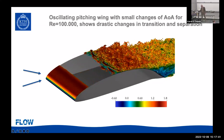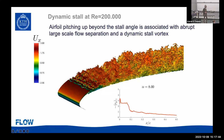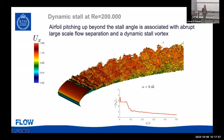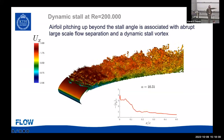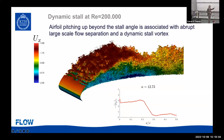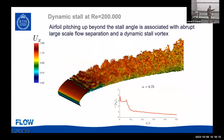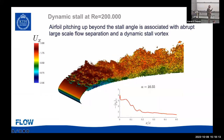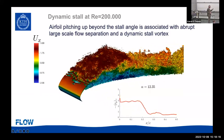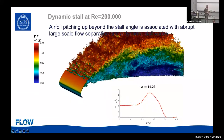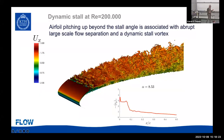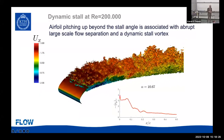The dynamic stall case involves an airfoil pitching up beyond the stall angle, leading to abrupt large-scale flow separation and then a dynamic stall vortex. This is at Reynolds number 200,000. You can see the angle of attack going from 9, 10, 11 degrees upward. The separation bubble becomes larger and larger, finally breaking off and propagating down as a dynamic stall vortex. This is of course a very complicated flow — can we get anything useful out of it?